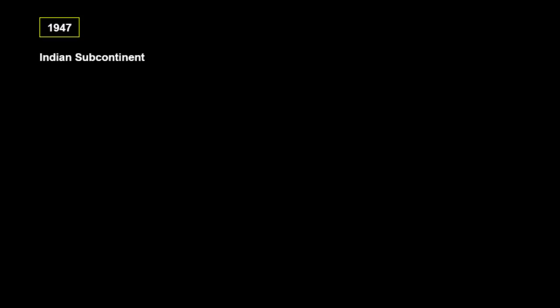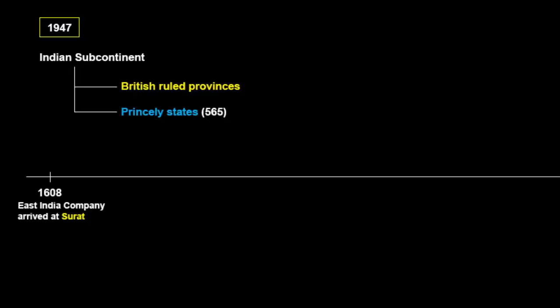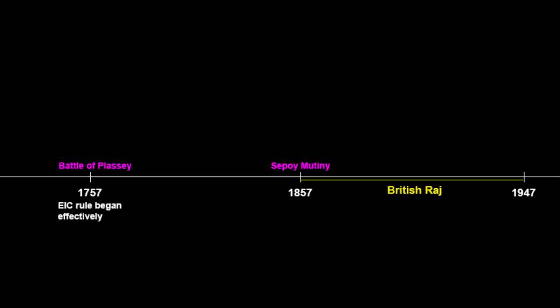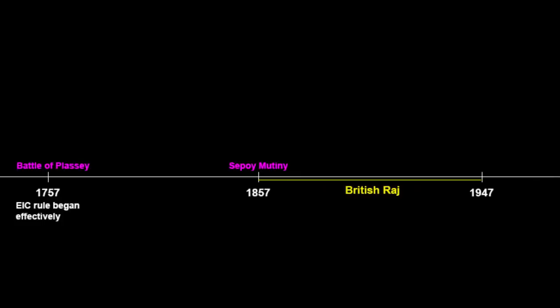At the time of independence in 1947, the whole of the Indian subcontinent was divided into two sets of territories. One was under direct British rule and the other was under the princely rule — those were referred to as princely states. Before 1947, there were 565 princely states in the entire Indian subcontinent. The East India Company arrived at the port of Surat in 1608 during the rule of Mughal Emperor Jahangir — that's how trade began. The company rule in India effectively began in 1757 to 1857, after which the British crown took direct control, which continued till 15th August 1947.